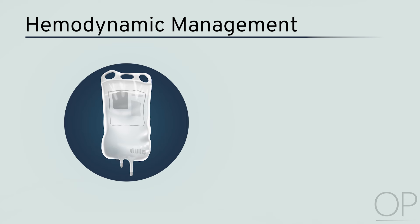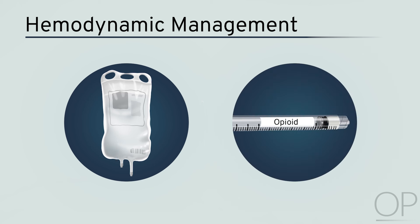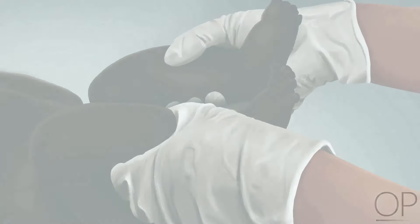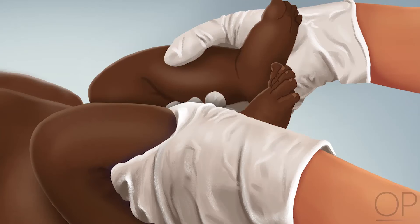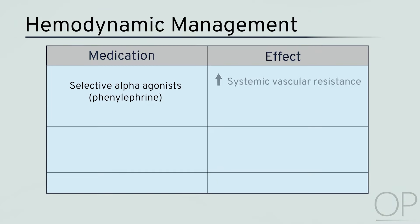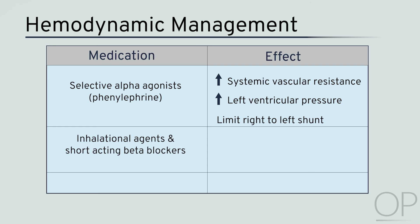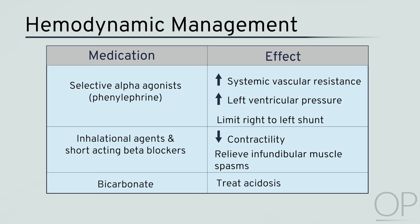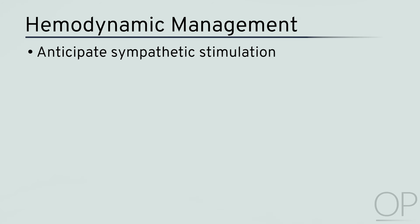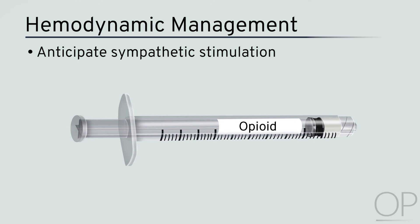When TET spells occur, increasing preload by volume expansion, stenting the right ventricular outflow tract open, as well as sedation with opioids to decrease tachycardia and catecholamine levels can improve pulmonary blood flow. If no IV access is available, abdominal compression by gentle pressure on the liver or pushing the legs up can provide an autotransfusion and temporarily augment preload for the right ventricle. Selective alpha agonists like phenylephrine can increase systemic vascular resistance and thereby pressure in the left ventricle to limit the right-to-left shunt. Inhalational agents and short-acting beta blockers can reduce contractility and relieve infundibular muscle spasms. Bicarbonate can be used to treat acidosis. Anticipation of sympathetic stimulation, pretreatment with short and fast-acting narcotics like fentanyl, and maintenance of adequate levels of anesthesia are important anesthetic considerations.